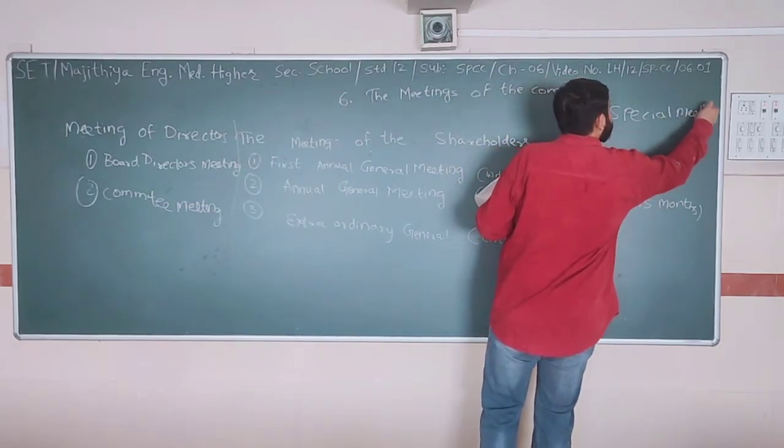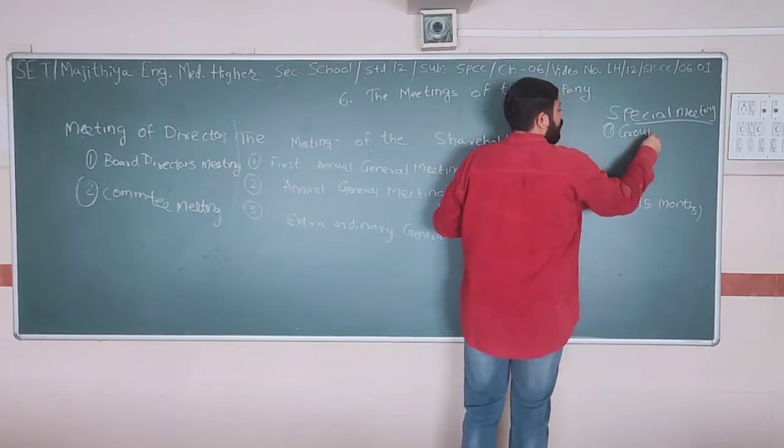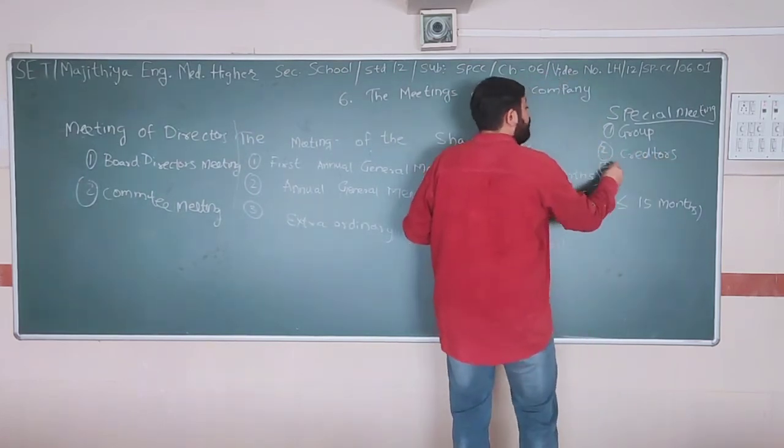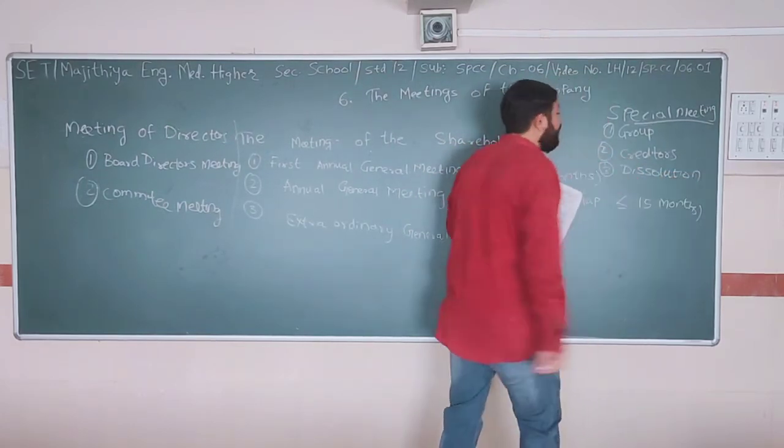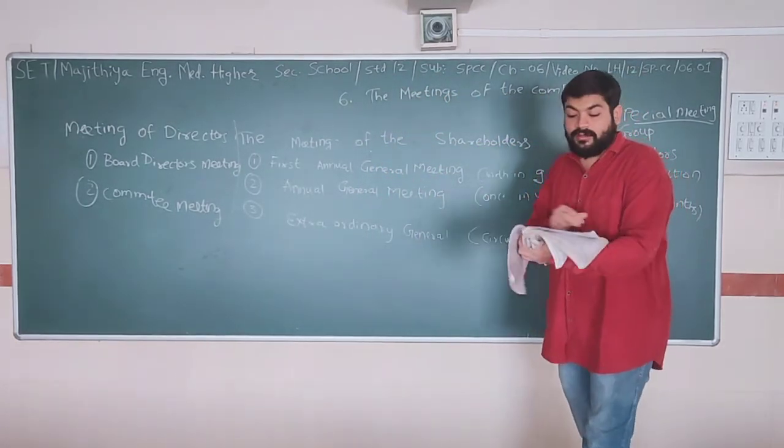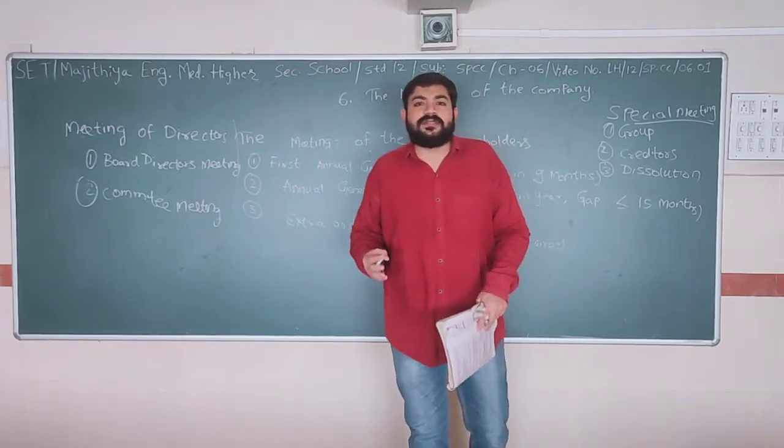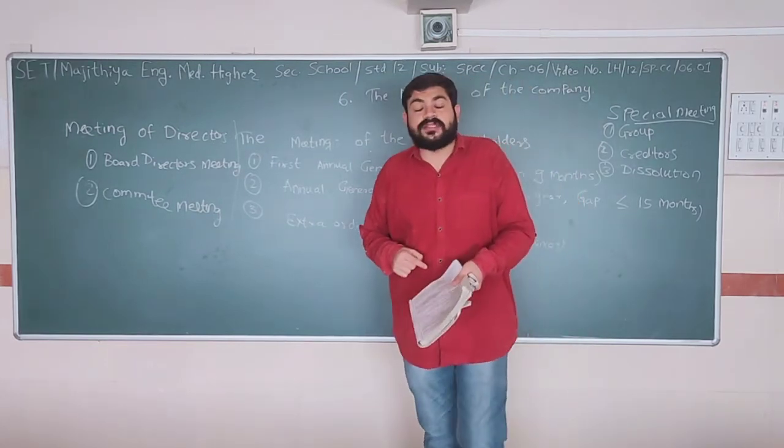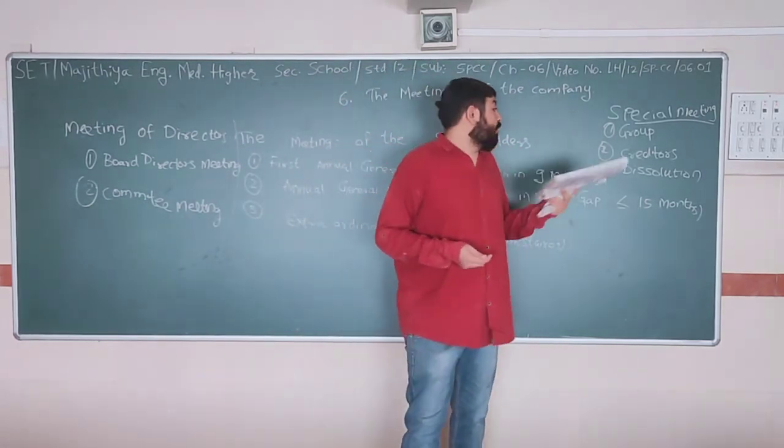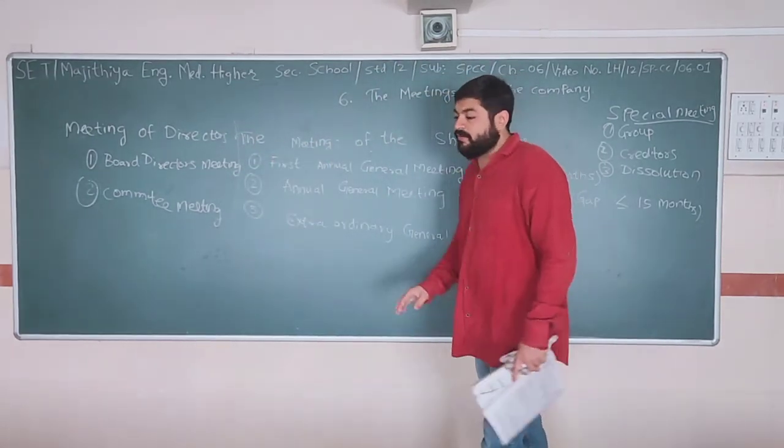Special meetings - the name itself suggests these are meetings which don't occur frequently, only when there is a need. Here in special meetings, specific groups come or specific classes come - that is meeting of the debenture holders, creditors. If something is happening in the company which is not appropriate for that class, for example, some assets are mortgaged without information to the debenture holders, they can call a meeting. Or creditors can call a meeting if their payments are not being made regularly. Or any specific group related to the company can call for dissolution meetings. Dissolution means winding up the company.